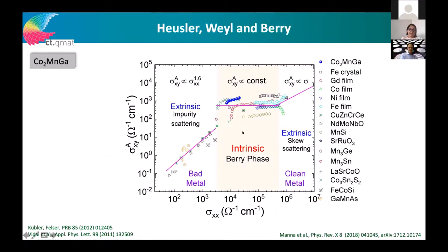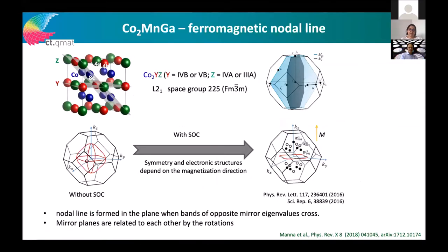The spintronics community looks very carefully at the anomalous Hall effect because there are extrinsic and intrinsic parts. Our Heusler films and single crystals nicely show the behavior expected for the intrinsic part; you can look at the temperature dependence and extract the intrinsic from the extrinsic contribution. The extrinsic parts play a lesser role because of the large enhancement due to the Berry phase.